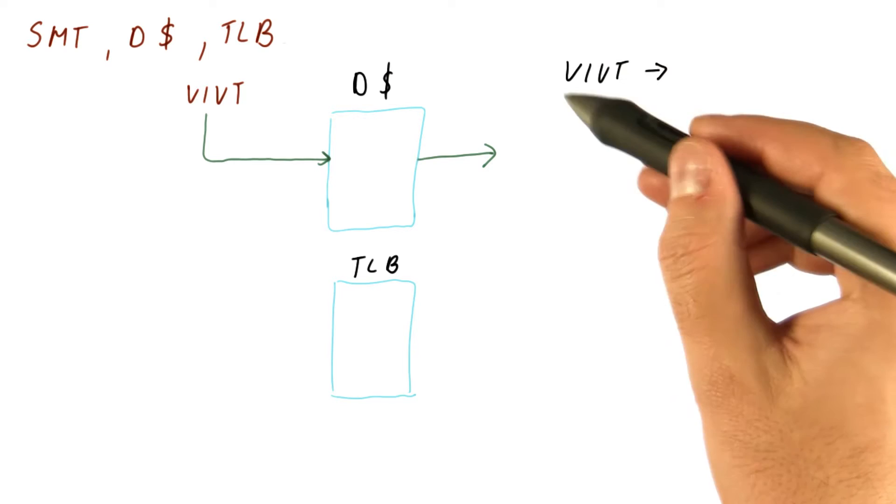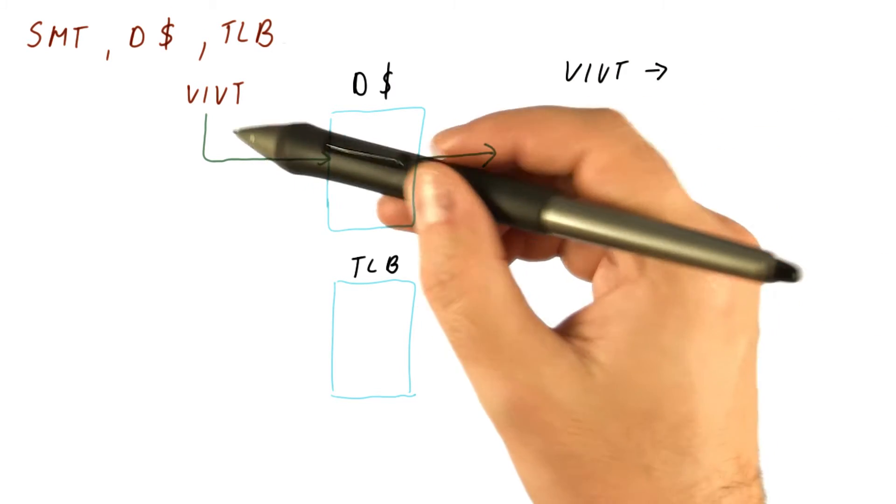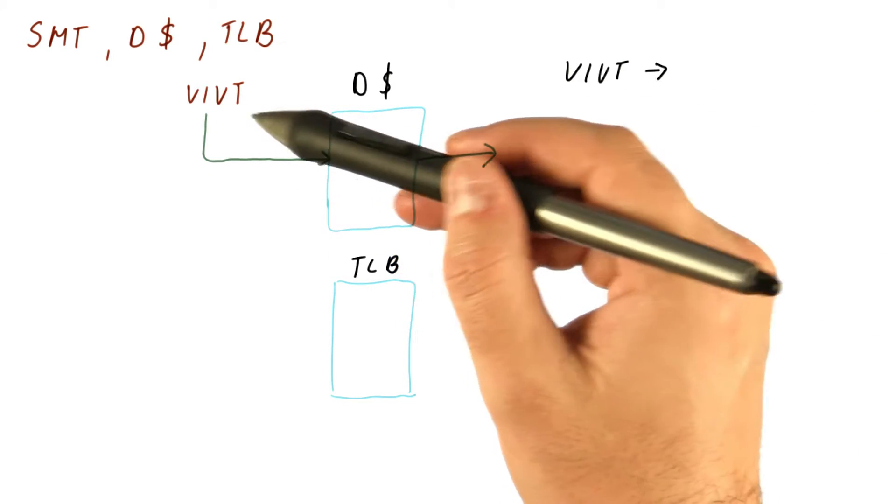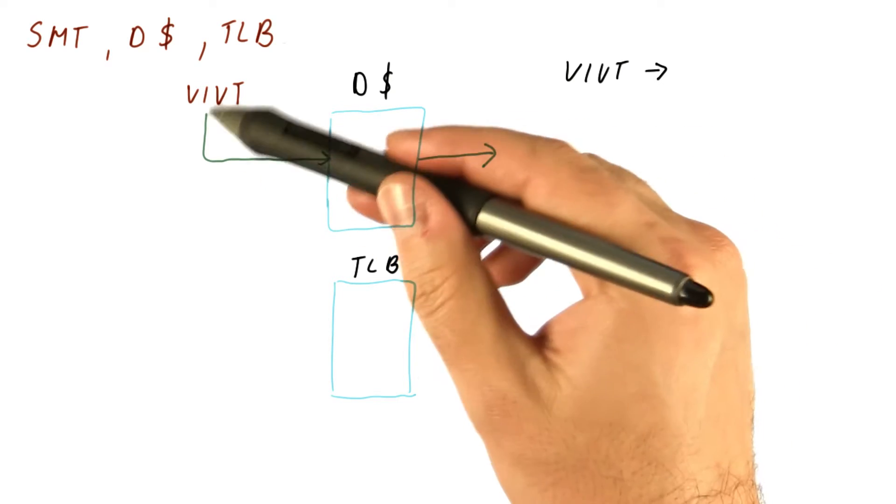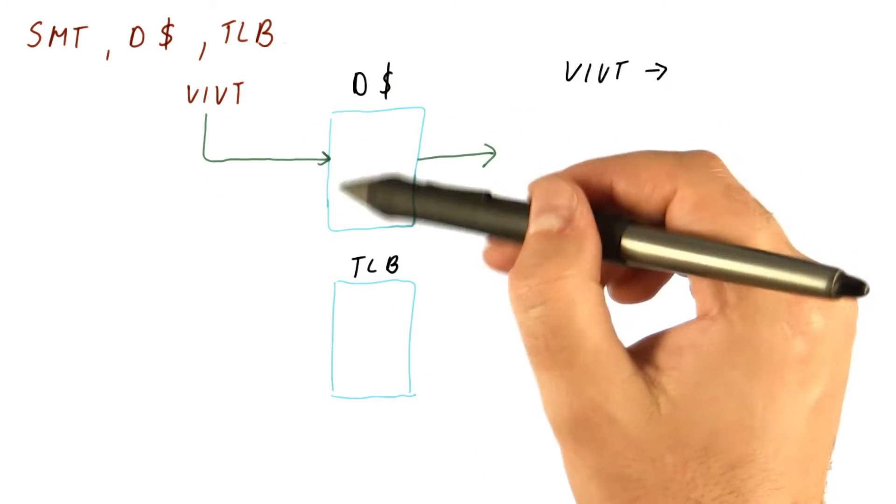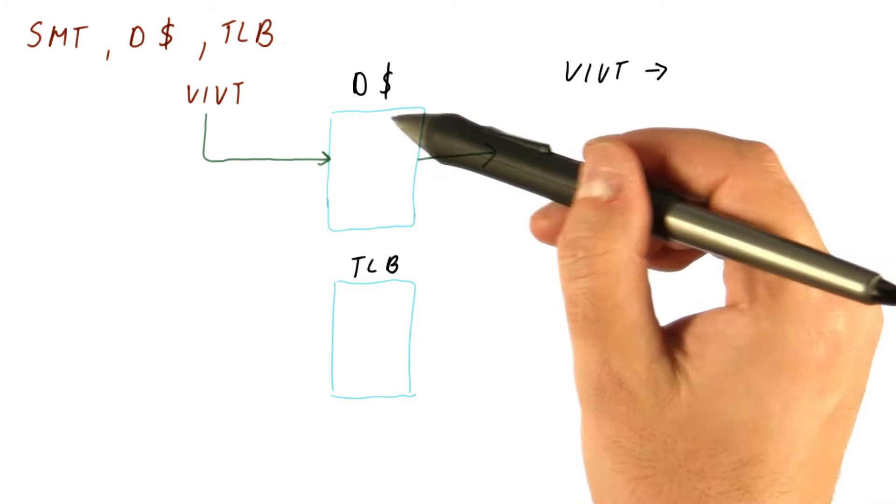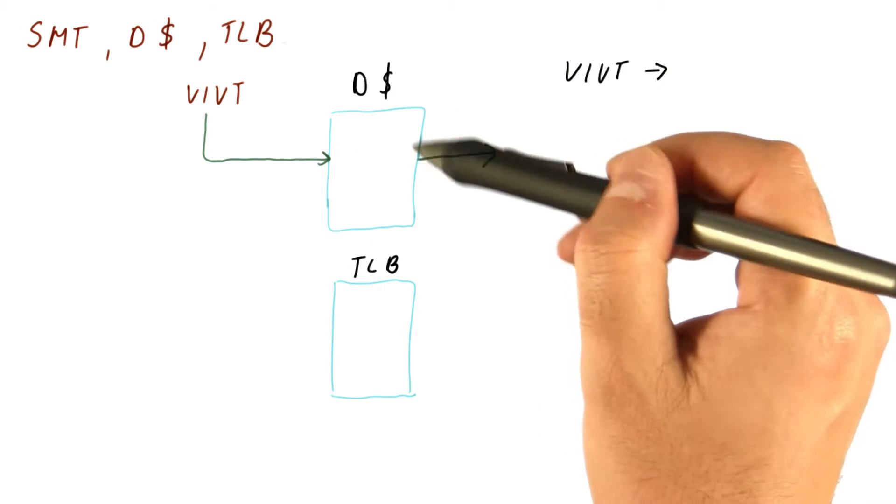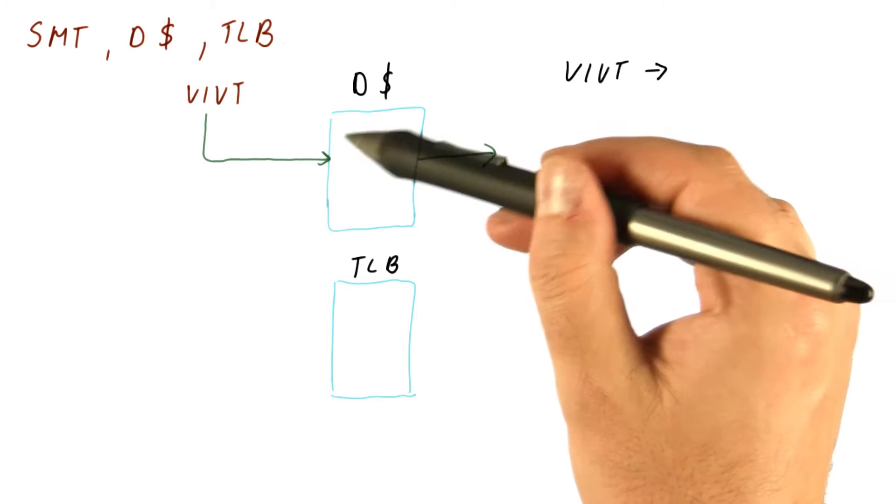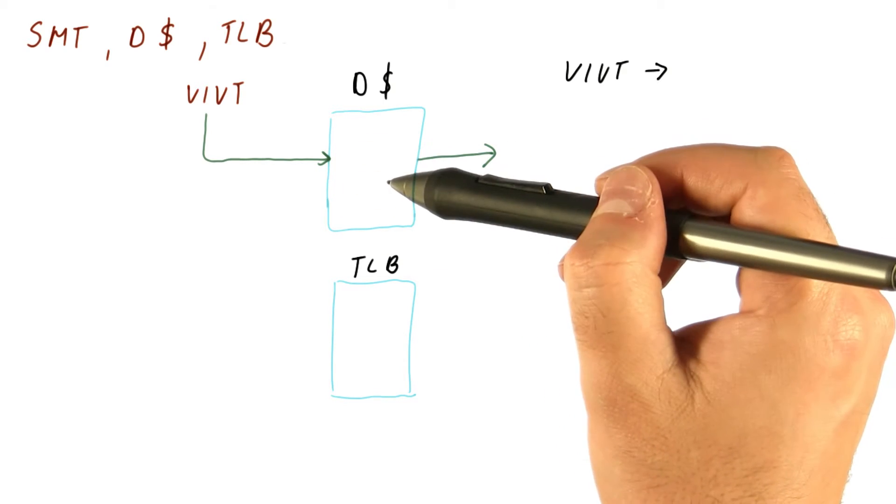With virtual indexed, virtually tagged caches, the problem is that our two threads might have different address spaces, and we're sending them simultaneously to the cache. The cache has no clue which one it's getting. So unless we make something really complicated to figure out which is which, we will have some aliasing between the two threads.